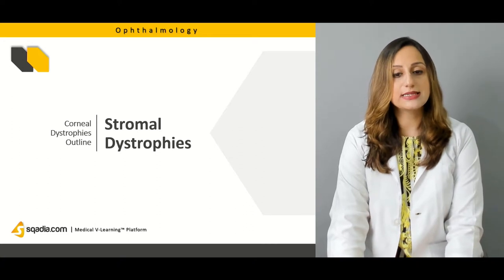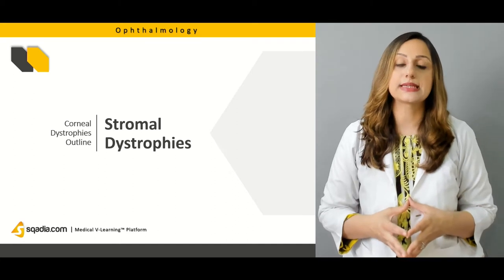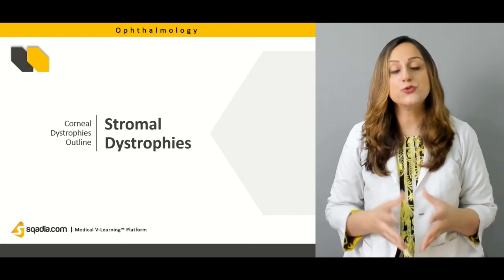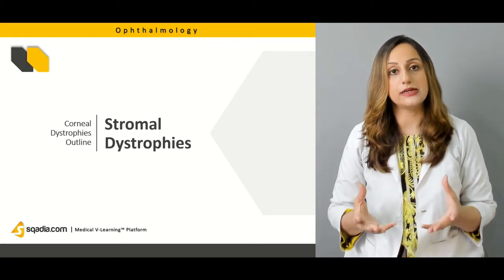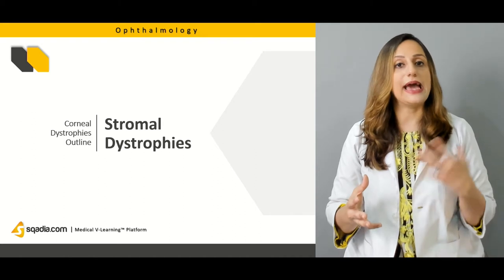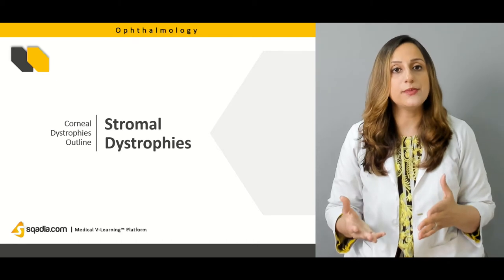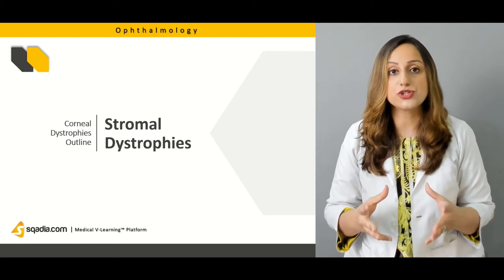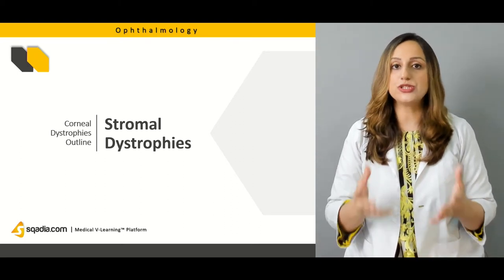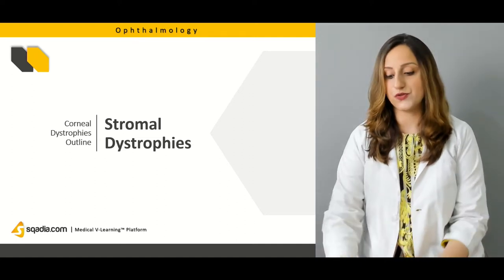We'll also be discussing the stromal dystrophies. Even the stroma can be involved, and there are a variety of type 1 and type 2 stromal dystrophies. We should know how to distinguish these from Schnyder or epithelial dystrophies. The pattern of mutations is usually autosomal dominant in these varieties. How to manage these patients will be discussed in this lecture.